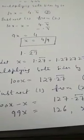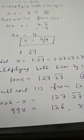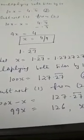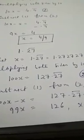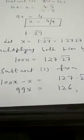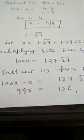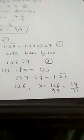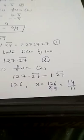So, we are multiplying both the sides of equation 1 by 100. 100x is 127.27 bar. Now, subtracting equation 1 from equation 2. 100x minus x that is 99x is equal to 126 and x is 126 by 99 and in lowest form it will be 14 by 11.